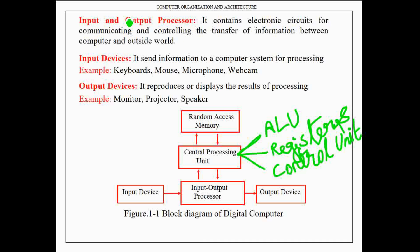The next important component of a digital computer is the input/output processor. It contains electronic circuits for communicating and controlling the transfer of information between the computer and the outside world. Input devices are used for sending information to a computer system for processing. Examples of input devices are keyboard, mouse, microphone, and webcam.